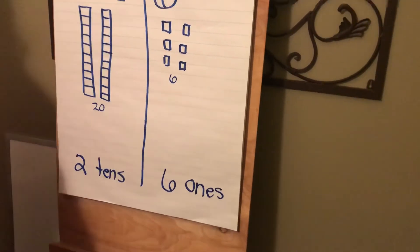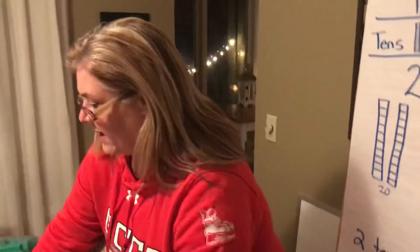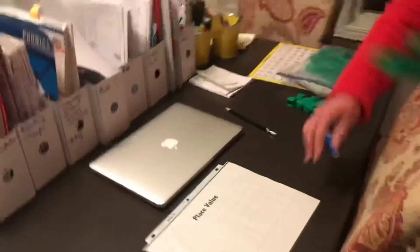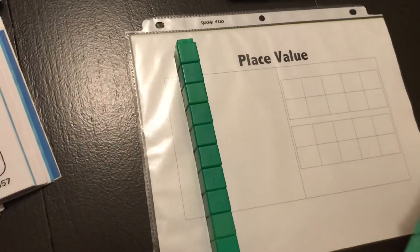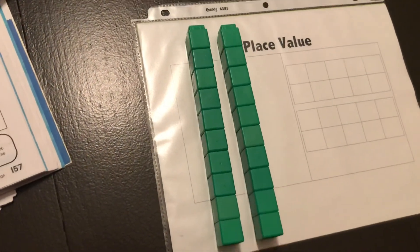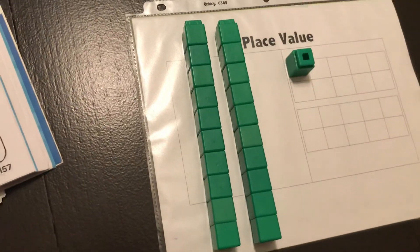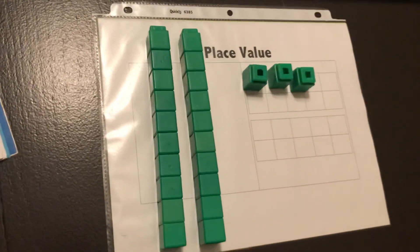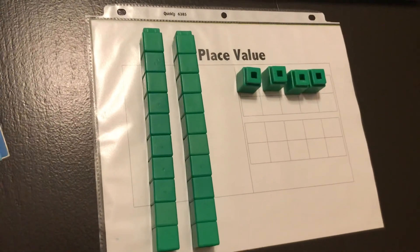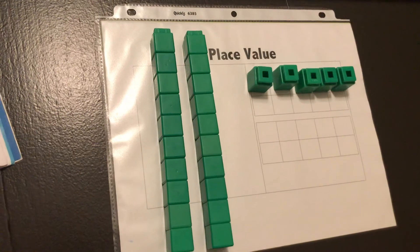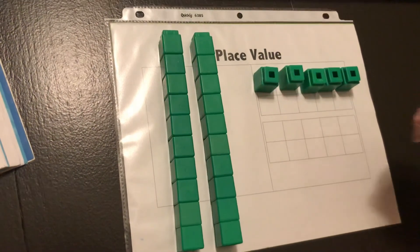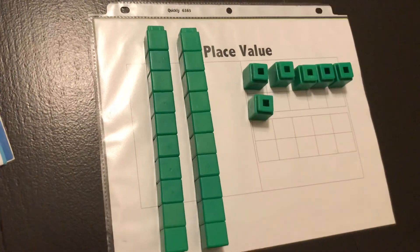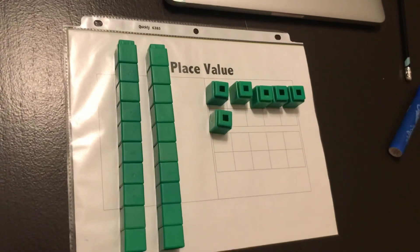If I was to build that on our place value mat over here, it would look like this. I have 10, 20, 21, 22, 23, 24, 25, 26 — like that. Hope that helps.